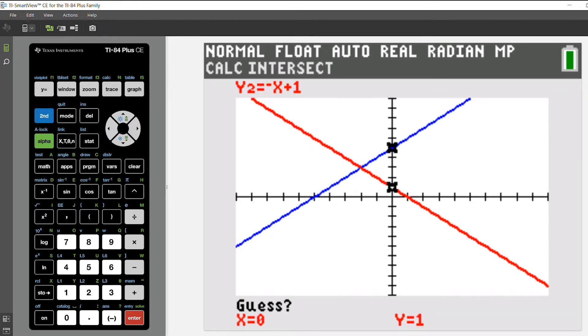And for a guess, you want to get as close to your point of intersection as you can. And hit enter.